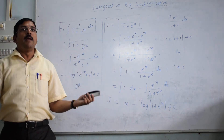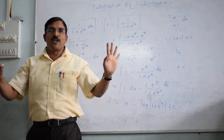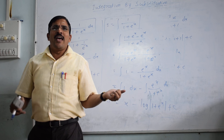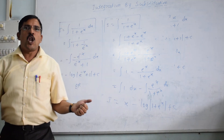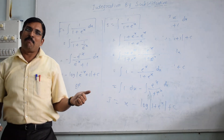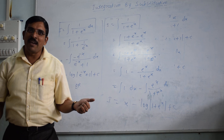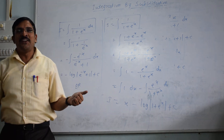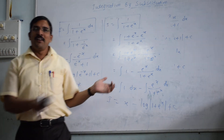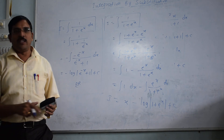Today in this video, we have seen that if the derivative of the denominator is present at the numerator, there is no need to use substitution. We can directly write log of the denominator. To summarize: numerator is derivative, denominator is function, answer is log of the denominator. This is a very important formula. In the next video, we will solve some interesting examples on this. If you like this video, please subscribe to get the latest videos. Thank you for watching.